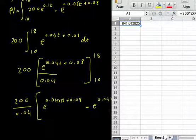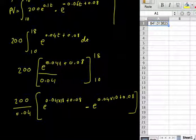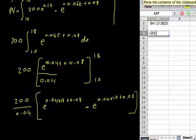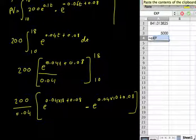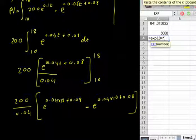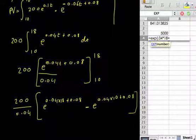so that'll be e 0.04 times 18 plus 0.08 minus e to the 0.04 times 10 plus 0.08. All right, and let's just use Excel for that. We'll find that out, first bit, 200 divided by 0.04, it's going to be like 5,000, yep,